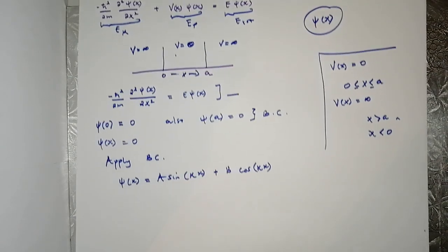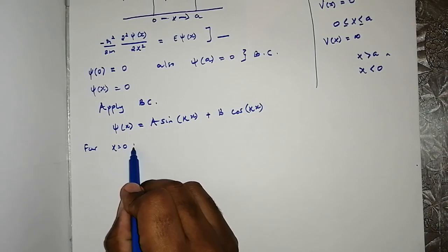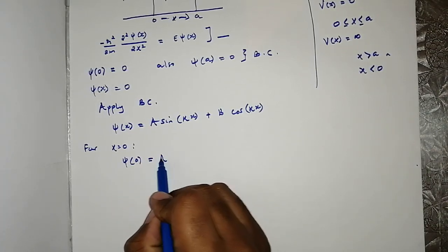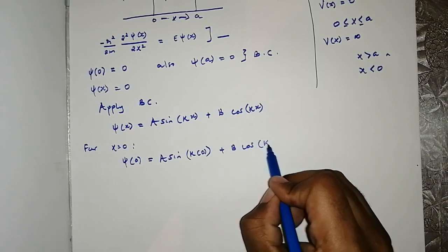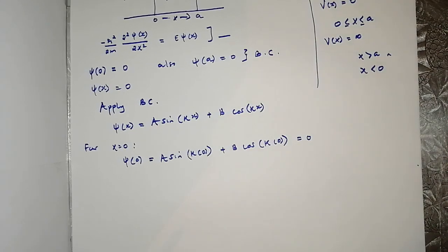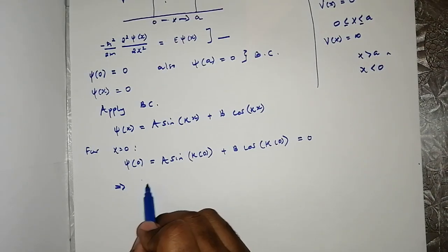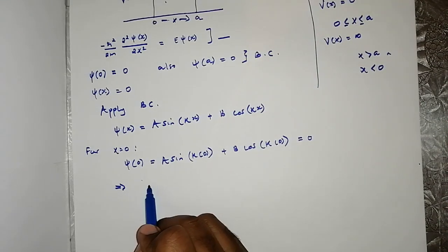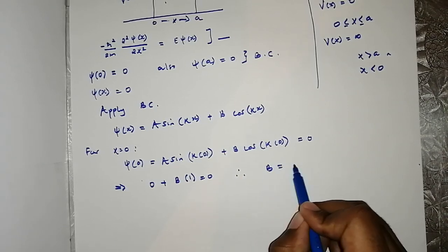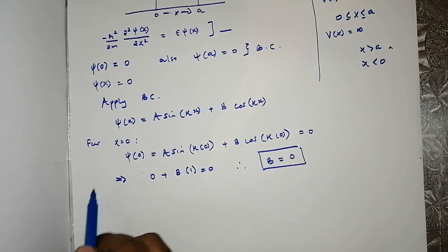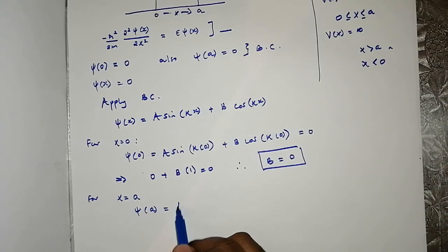We are going to apply the boundary conditions. For x=0: ψ(0) = A sine(k·0) + B cos(k·0) = 0, because of the boundary condition. Since sine(0) = 0, this becomes 0 + B·cos(0) = 0, and cos(0) = 1, so B·1 = 0. Hence B equals zero.